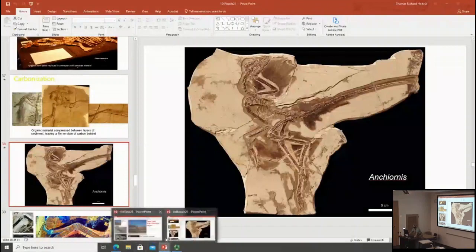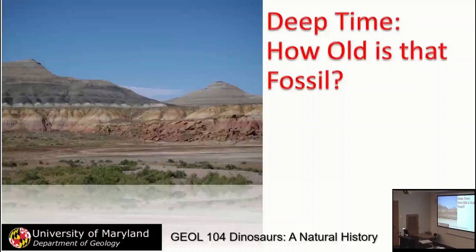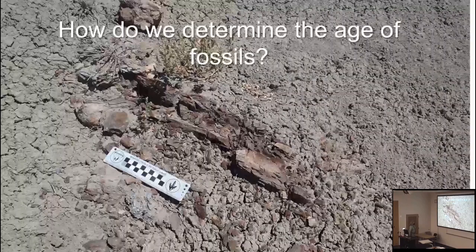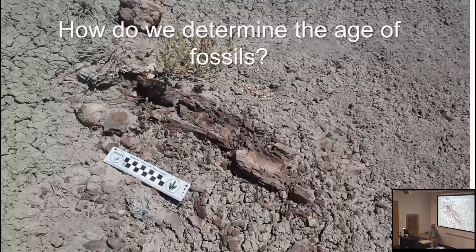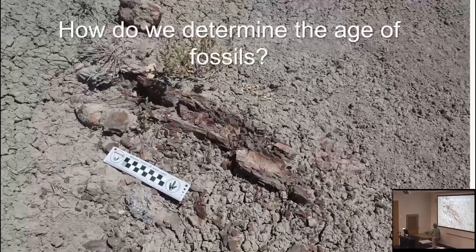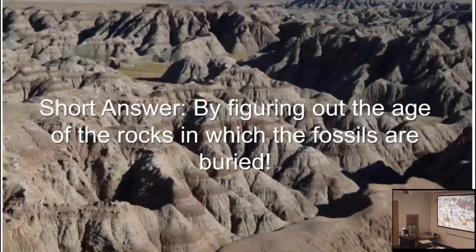Now the new lecture for today — which we'll continue into Wednesday — is our look at deep time, answering the question: how old is that fossil? We've looked at how rocks form and how fossils form. Now let's figure out how we determine the age of fossils. Right here is a bit of a long bone, a femur — the thigh bone — of a smallish tyrannosaur, probably a young Tyrannosaurus rex that we marked but didn't really collect because it had fallen apart too much. It's up in Montana. The short answer to how old that fossil is: we've figured out the age of the rocks in which the fossils are buried.